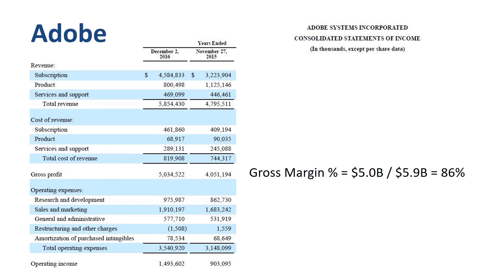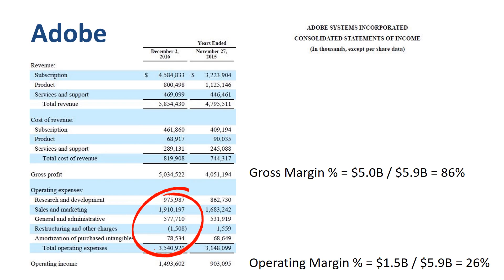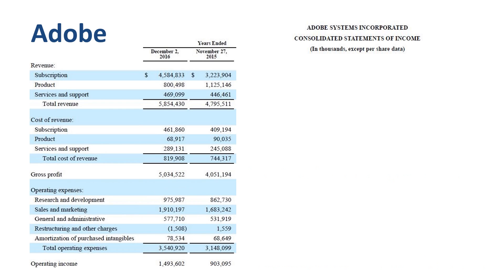At a technology company like Adobe, sales and marketing expenses are very significant at 33% of revenue, and Research and Development is large as well at 17% of revenue. Due to the large operating expenses, even though Gross Margin is 86% — the highest out of the four companies we are reviewing — the Operating Margin is 26%, the second highest out of the four.